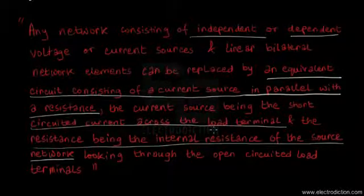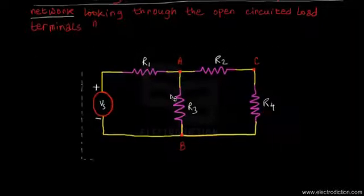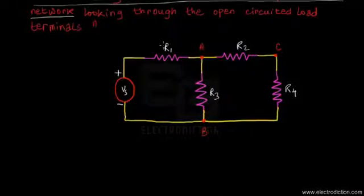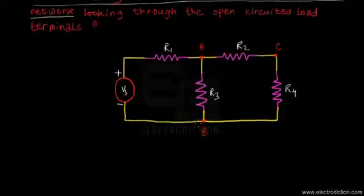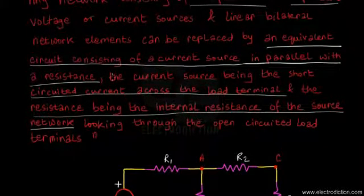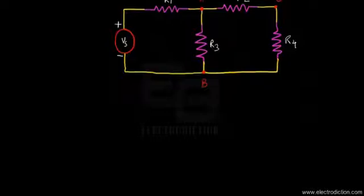The equivalent resistance can be compared to the Thevenin resistance — they are the same. Looking at the example network from our previous tutorial on Thevenin's theorem, this is a linear network consisting of bilateral circuit elements, specifically resistors R1 to R4. According to the theorem, this entire network can be replaced by an equivalent circuit consisting of a current source in parallel with a resistance.